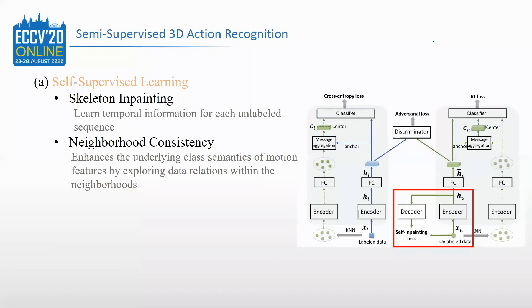Skeleton inpainting aims to fill the masked human parts in the input sequence, which learns temporal information for each unlabeled sequence, but it ignores the shared information among samples with the same action class.